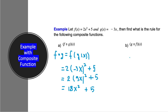Now let's go to part B — let's write with a different color. B is g∘f of x. Let me write again with this denotation: g composition of f of x. We can write this form or another form — sometimes we find it in two forms. It is equal to g of f of x.